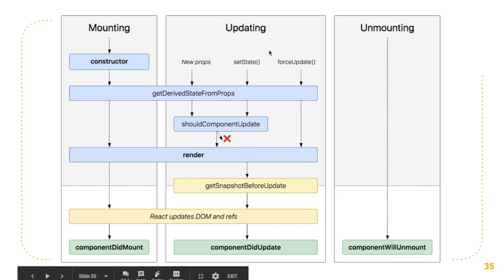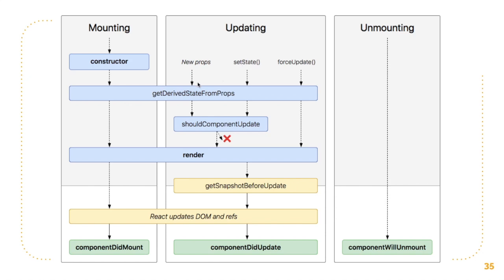In the updating phase, if you go ahead and change the state using setState, or if there are some new props coming into the child component — for example, passing props from parent to child — then getDerivedStateFromProps will be called. If you're changing the initial state using setState, or if you try to force update a component using the forceUpdate method, even then getDerivedStateFromProps is called.